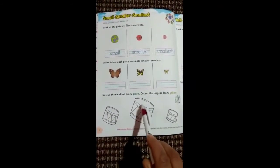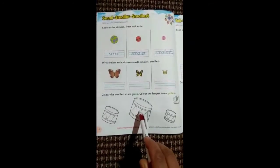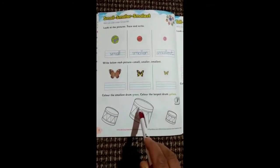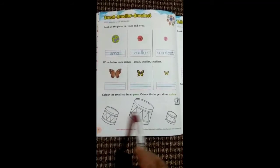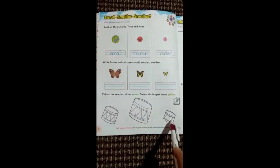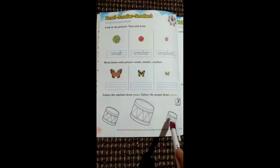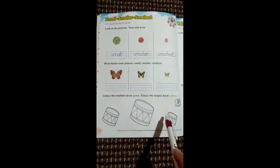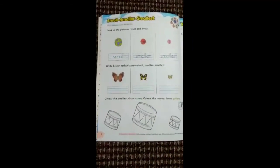You can use sketch pens or crayons. Which one is smallest among all? This drum is smallest among all. You have to color it with the green color.